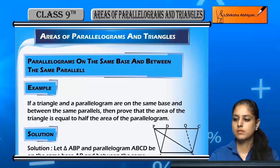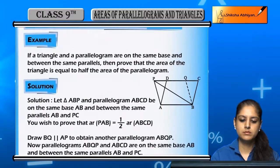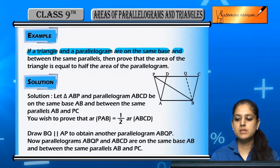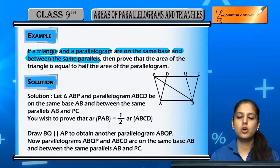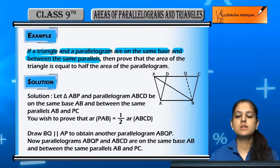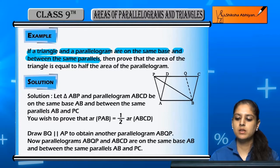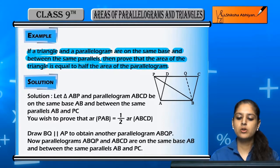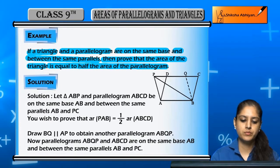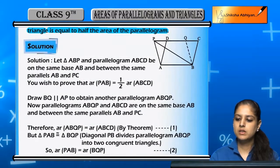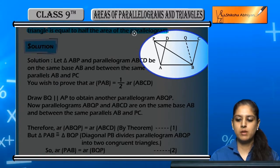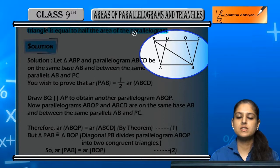A core example: if a triangle and a parallelogram are on the same base and between the same parallel lines, then the area of the triangle is half the area of the parallelogram. Consider the figure where you can see parallelogram ABCD and triangle APB on the same base AB.